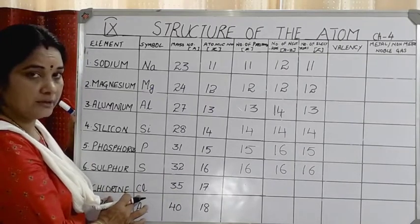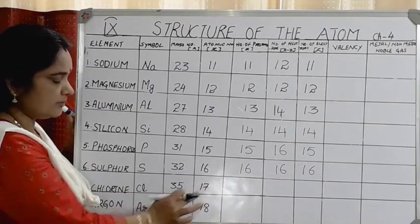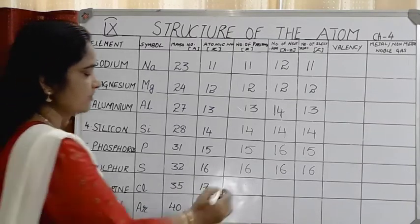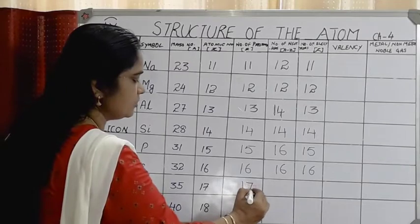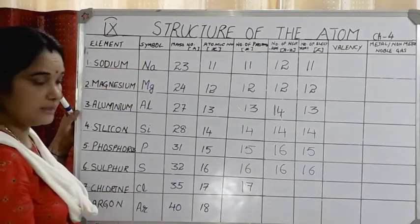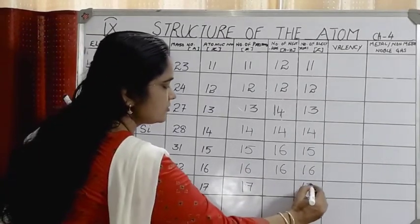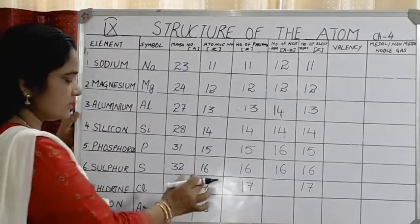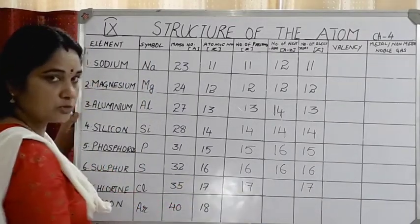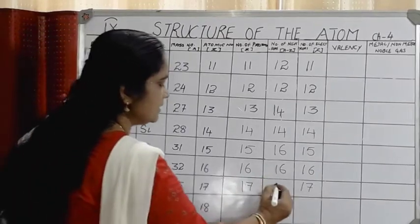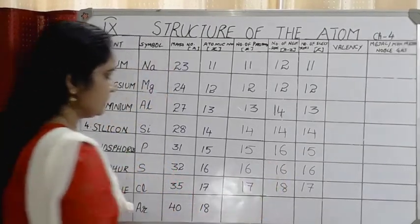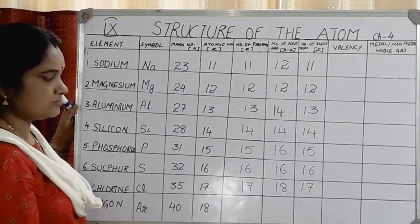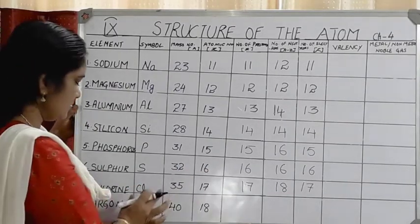Next element is chlorine, with atomic number 17 and mass number 35. Number of protons = 17, number of electrons = 17. Neutrons = mass number minus atomic number = 35 minus 17 = 18. So chlorine has 17 protons, 17 electrons, and 18 neutrons.